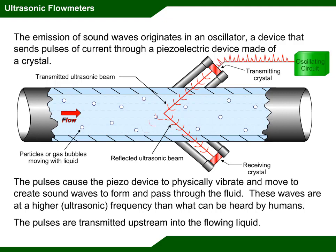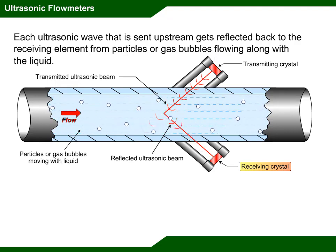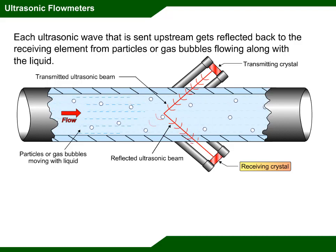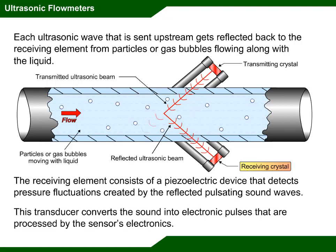The pulses are transmitted upstream into the flowing liquid. Each ultrasonic wave sent upstream gets reflected back to the receiving element from particles or gas bubbles flowing along with the liquid. The receiving element consists of a piezoelectric device that detects pressure fluctuations created by the reflected pulsating sound waves.